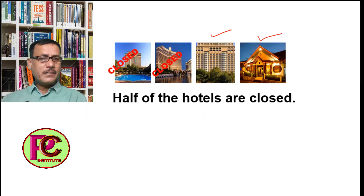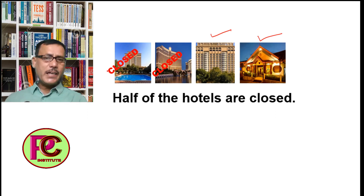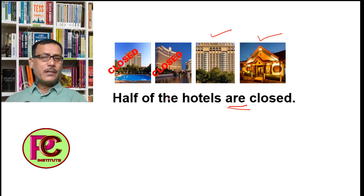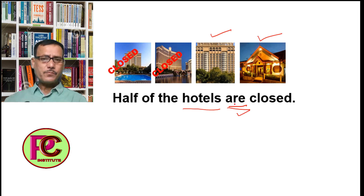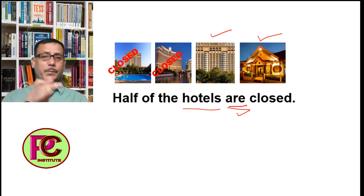Numbers like 2, 3, 4, 5, 6 and so on are all plural. So we say 'half of the hotels are...' — after 'half of', 'one third of', 'two thirds of', or 'three fourths of', if the noun is countable and plural, the verb will also be plural. This sentence means: half of the hotels are closed.